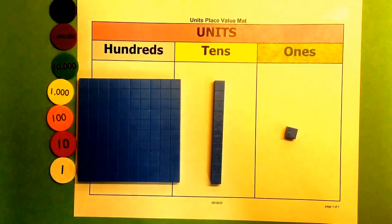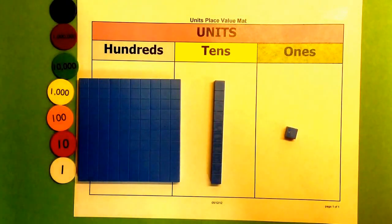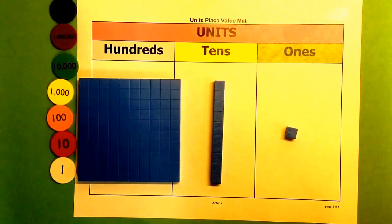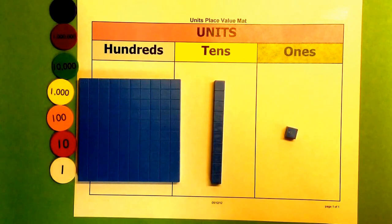Today we're going to be talking about the use of place value disks in the classroom. Place value disks, just like base 10 blocks, are used to model and subtract numbers. They are non-proportional models used to further develop place value understanding.